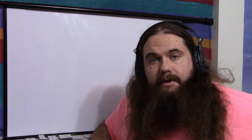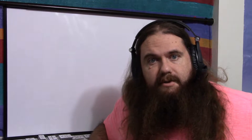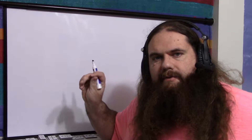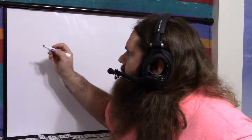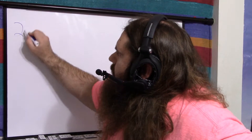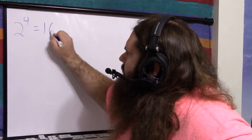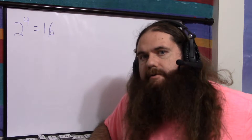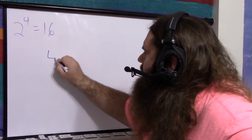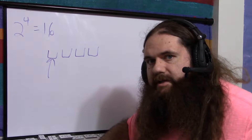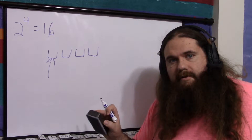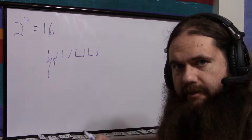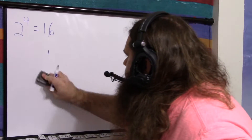Two's complement is how we do signed integers in computers. First, you have the width of the number — how many bits. Let's say we have four bits. Two to the four is 16 different values, just four bits. And the first bit is still a sign bit. If it's zero, the number is positive or zero. If it's one, the number is negative.